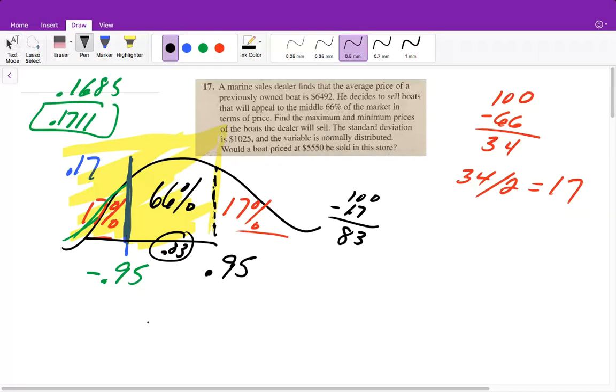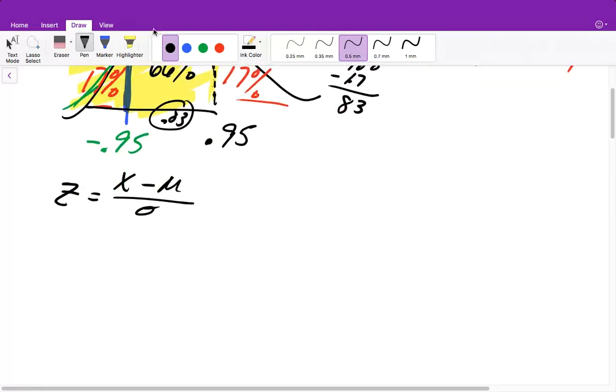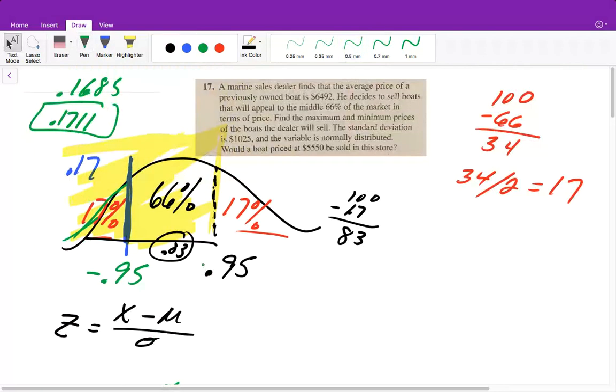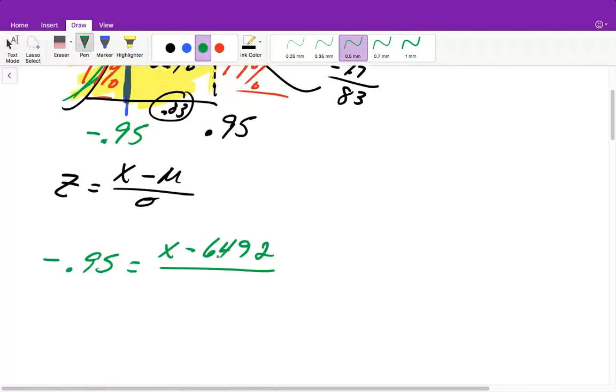So that means we need to find the X value, so we know the Z, we need to solve for our X. So our average is 6,492, and the standard deviation is 1,025. So we will then say negative 0.95 is equal to X minus our mean, which is 6,492, divided by the standard deviation, which is 1,025.